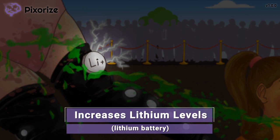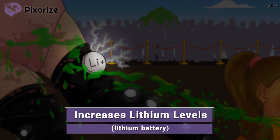Thiazide diuretics can increase lithium levels in the body, causing toxicity in patients who take lithium for bipolar disorder or other psychiatric reasons. The reason lithium levels increase is thought to be related to the hyponatremia we just talked about. The human body is always trying to maintain equilibrium, so a loss of sodium into the urine caused by thiazide diuretics in one part of the kidney leads to increased sodium uptake in another part as a compensatory response.